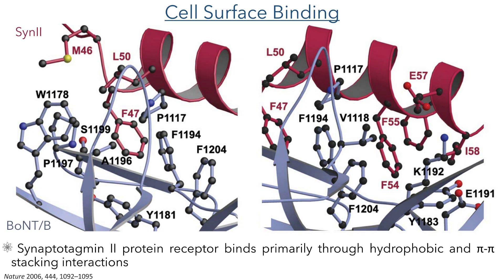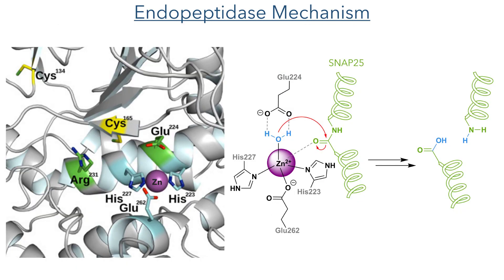The synaptotagmin protein primarily bonds through hydrophobic and pi-pi stacking interactions between tryptophan and phenylalanine subunits. Once the neurotoxin is inside the cell and the light chain is cleaved from the heavy chain, it can act as an endopeptidase. In the botulinum neurotoxins, this is catalyzed by a zinc atom in the active site in a distorted tetrahedral geometry, coordinated by glutamate and two histidine units, with the fourth coordination site occupied by water. This zinc atom coordinates to an amide within the SNAP25 protein, making it more electrophilic, and delivers the coordinated water molecule, which is further activated by another glutamate residue, promoting hydrolysis of SNAP25 and leading to the toxic effects seen in botulism patients.